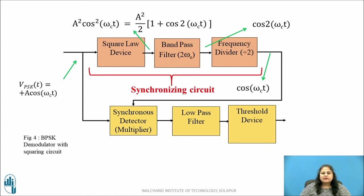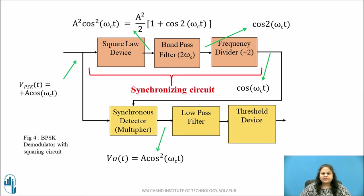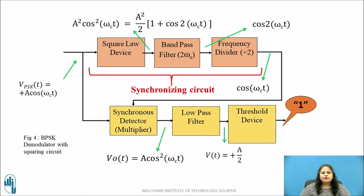In the synchronous detector, the locally recovered synchronous carrier is multiplied with the received BPSK signal. When the input BPSK signal is +A cos(ωc·t), the output of the synchronous detector is A cos²(ωc·t), which is then passed through the low pass filter, giving a DC term of +A/2. This voltage is applied to a threshold device whose threshold is set to 0 volts. Since +A/2 is greater than the threshold value, the device gives output logic 1.